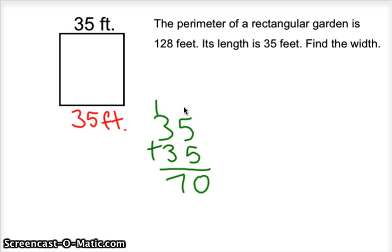So now what do I do? I know that it's supposed to be 128 feet all the way around, but I only have 70 so far. So what should I do? You should do 128 minus 70. Good. Let's do 128, what we know that we should have as our total. Get rid of what we know we already have. So 128 minus 70 is 58.